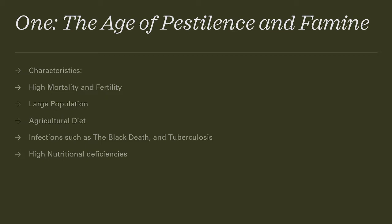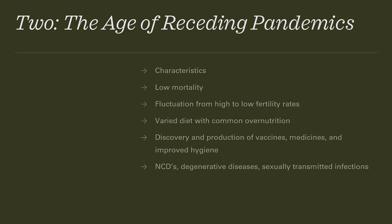The first transition, the age of pestilence and famine, has characteristics of high mortality and fertility, large populations on an agricultural diet, with infections such as the Black Death and tuberculosis taking place during this period, along with high nutritional deficiencies and high stratification of society. This time period goes all the way back to the Antonine Plagues of the Roman era, mostly up to the Industrial era — making it one of the longest-running transitions.